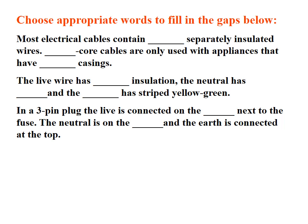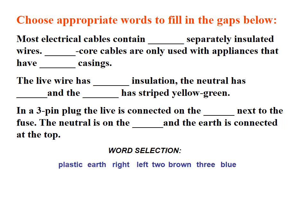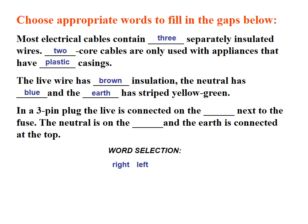Most electrical cables contain three separately insulated wires. Two-core cables are only used with appliances that have plastic casings, because plastic is an insulator. The live wire has brown insulation, the neutral wire has blue insulation, and the earth wire has striped yellow-green insulation. In a three-pin plug, the live is connected on the right next to the fuse, the neutral is on the left, and the earth is connected on the top.